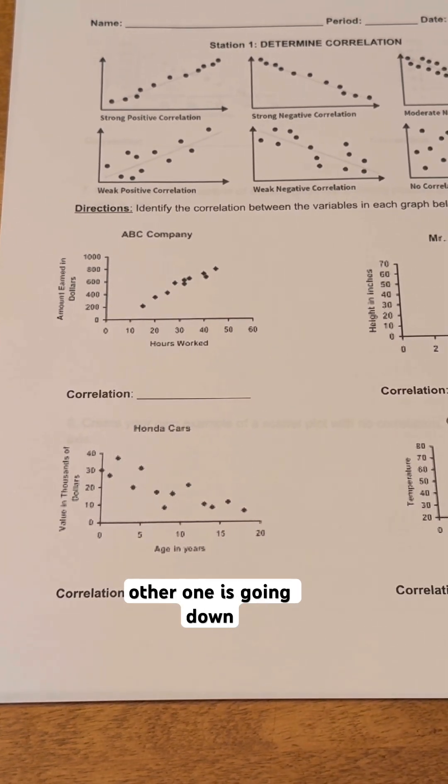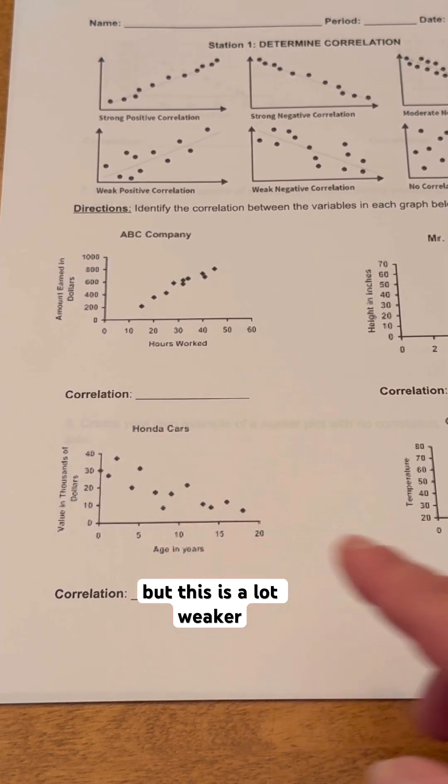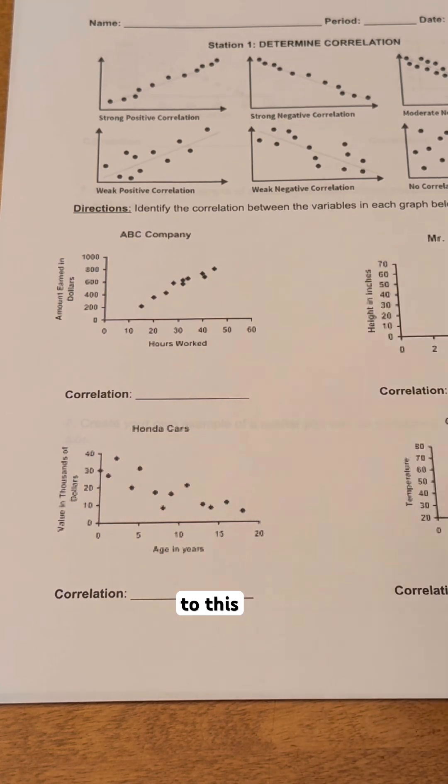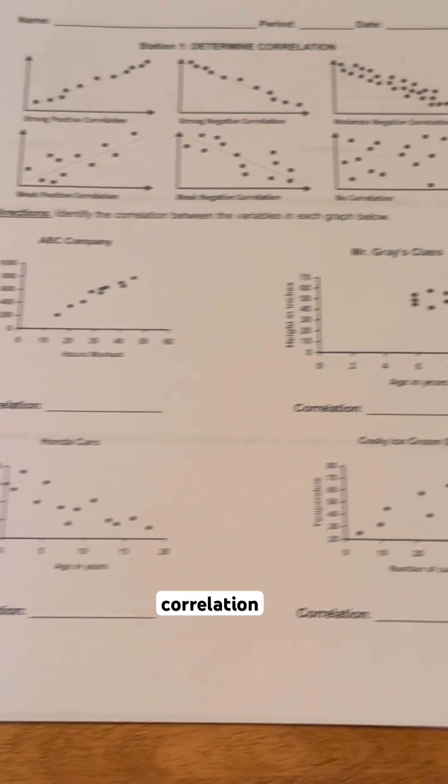the other one is going down. But this is a lot weaker compared to this top one. So this is going to be a weak negative correlation.